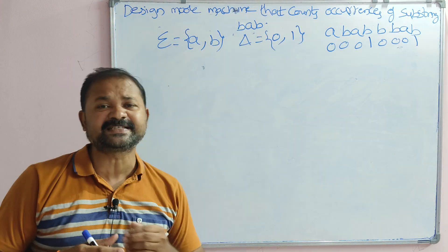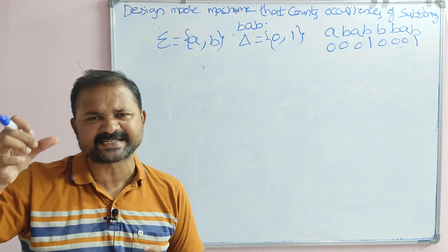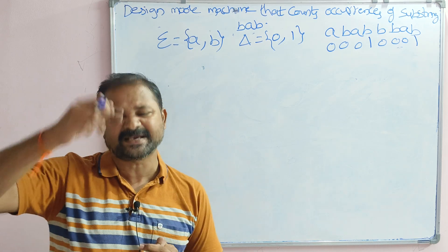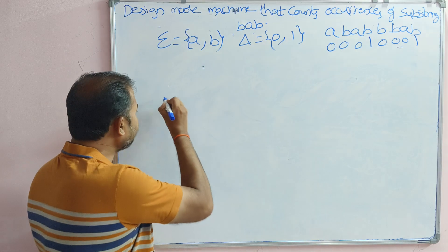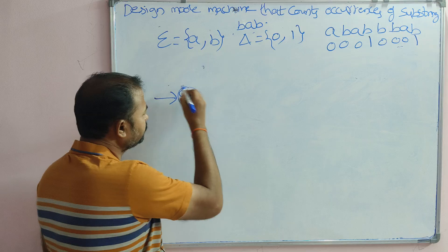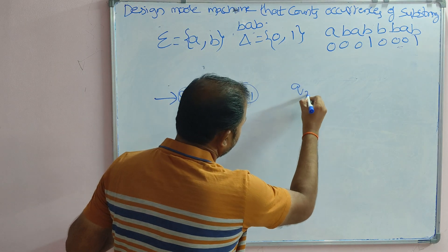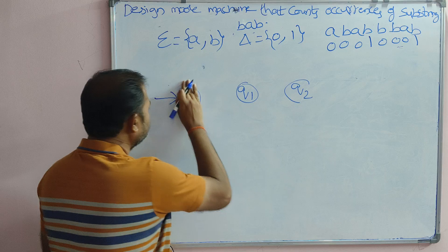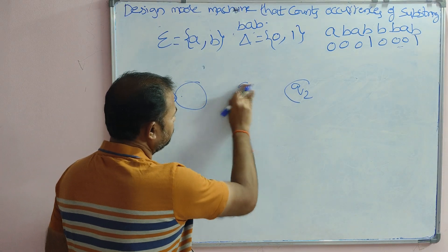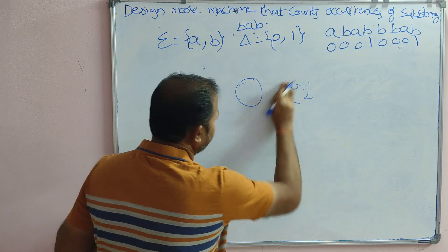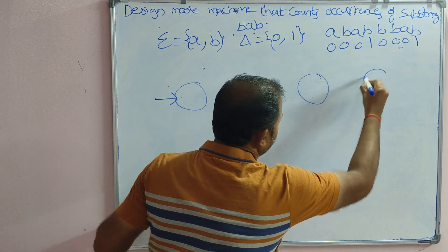The substring size is 3, so the total number of states required is 3 plus 1, which equals 4 states. The initial state is q0, and the remaining states are q1, q2, and q3.